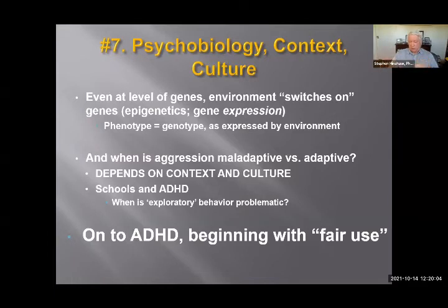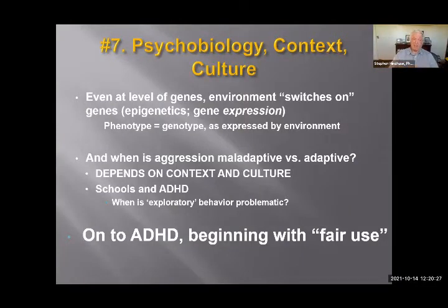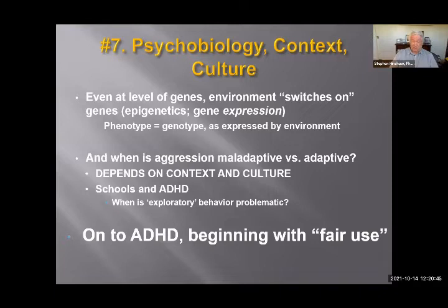The seventh principle is that you can't understand things reductionistically in developmental psychopathology or any clinical efforts. Even genes — they're fixed at birth, but epigenesis predicts when genes get switched on. Even in defining what psychopathology is: is aggressive behavior adaptive in a high-risk environment but maladaptive in a less risky one? That has a lot to do with ADHD. Is it just a function of unresponsive classrooms, or is there pathology there?